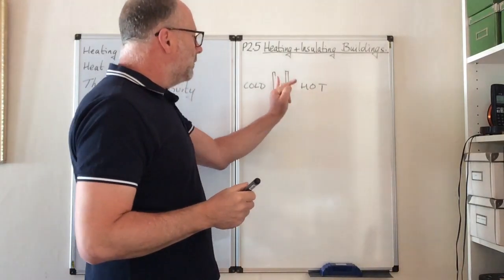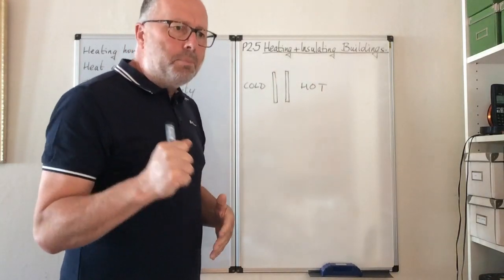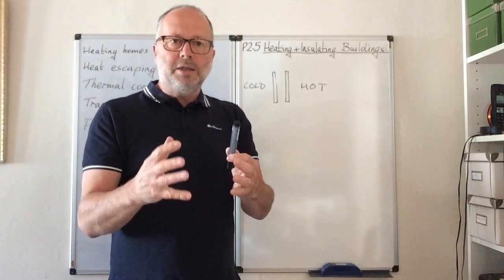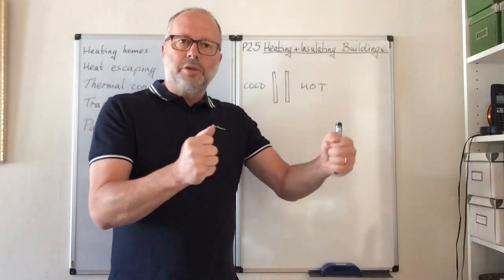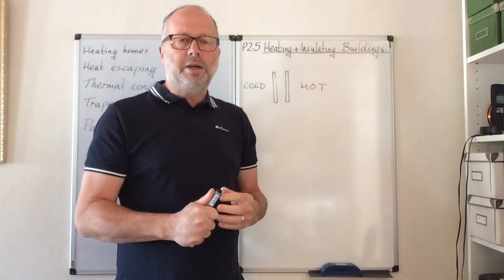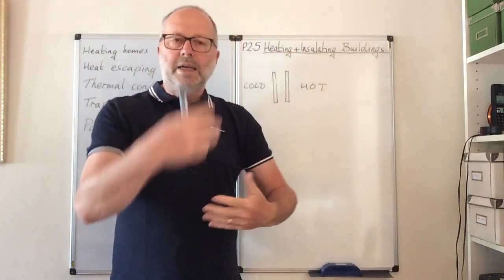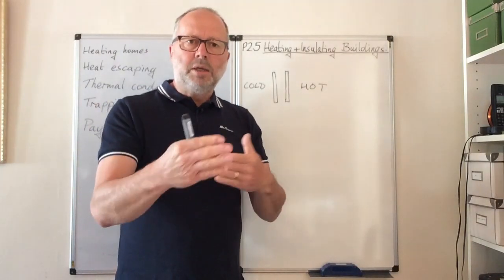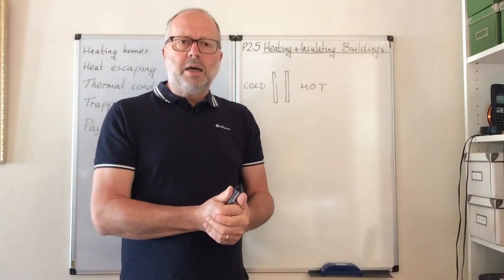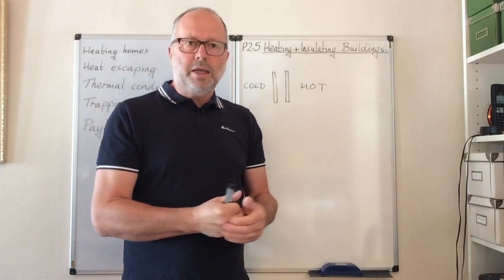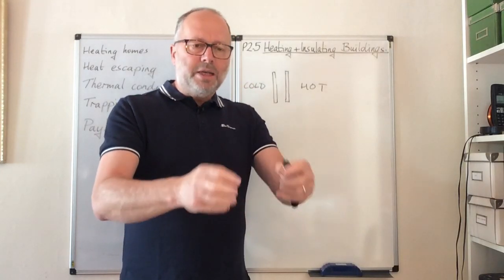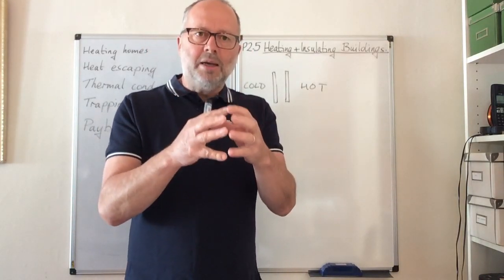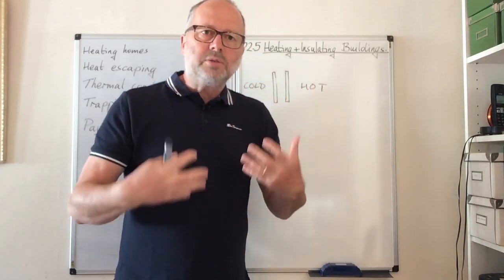Air is a poor conductor — it doesn't conduct heat very well — but it does convect, so particles can move around and transfer heat that way. Hot air rises and cold air falls, churning the heat around. If you can stop the air from moving, you stop the heat from moving too. That's how duvets work: they're full of fibres that trap tiny bits of air. If the air is trapped, it can't transfer heat around.